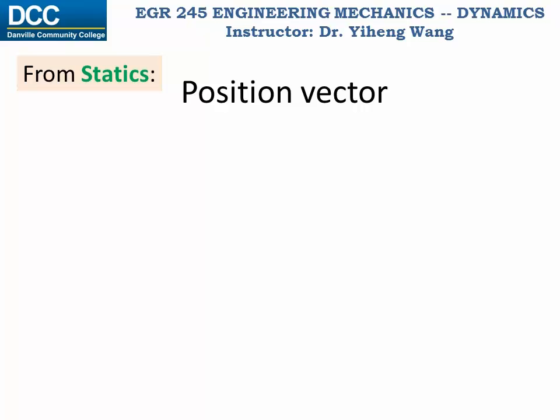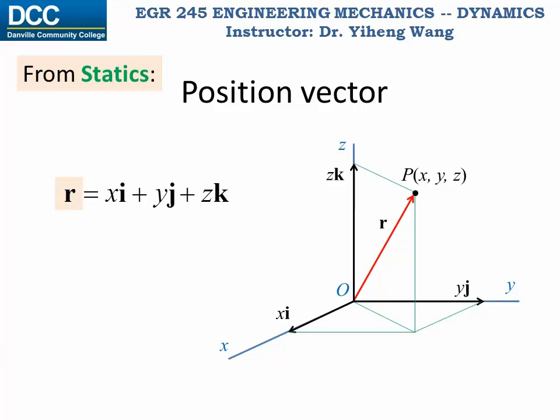If you recall from the statics course, the position of a particle can be represented by the position vector. To do that, we need to first establish a reference coordinate system, in this case a 3D x, y, z rectangular coordinate system. The particle now has coordinates of x, y, z, and the position of the particle is represented by a vector r that is drawn from the origin to this particle.